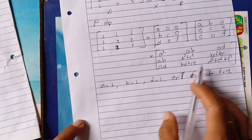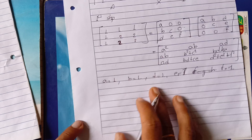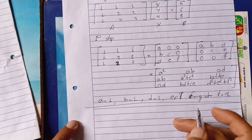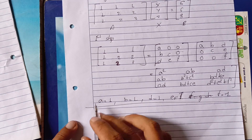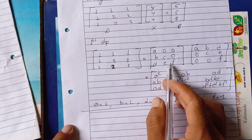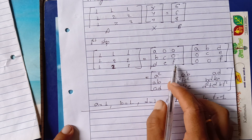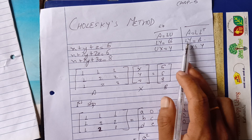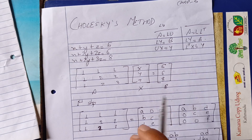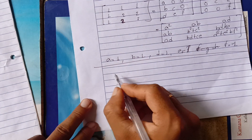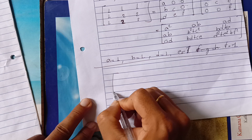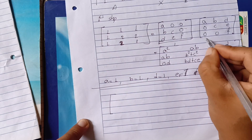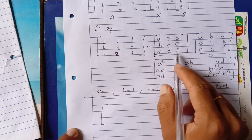So we have the matrix: one, one, one, one. Let's do the first step. First step is A, B, C. The second step is L·Y equals B. So L is the lower triangular matrix. This is L, and this is L transpose.